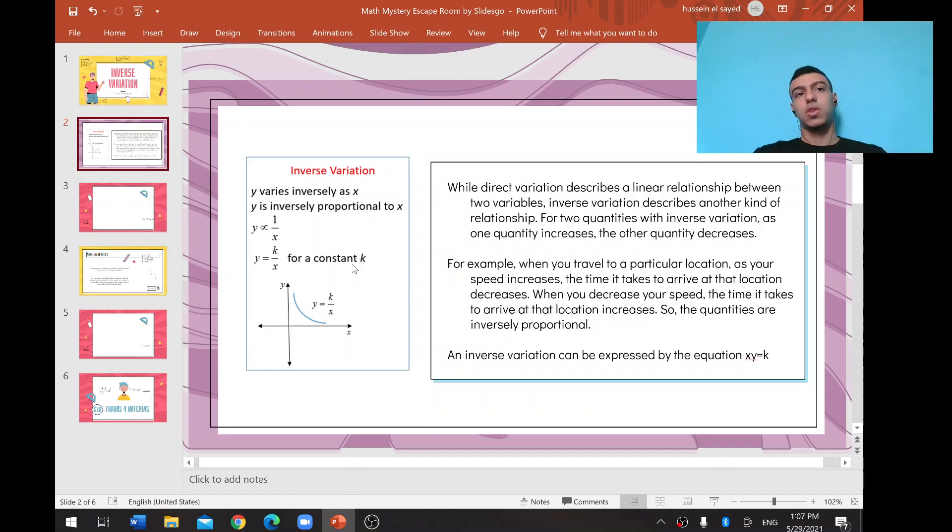As for the constant k, k equals xy. Unlike direct variation, which is graphed by a straight line passing through the origin, inverse variation is graphed by a curve.